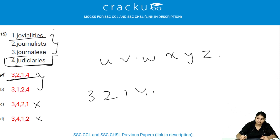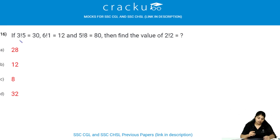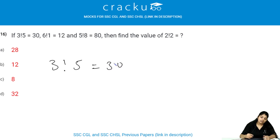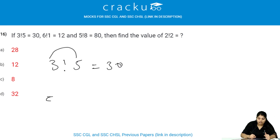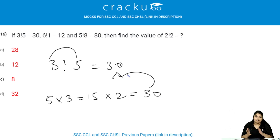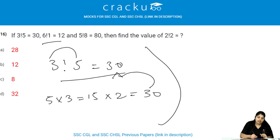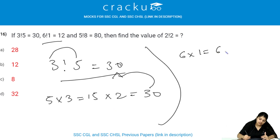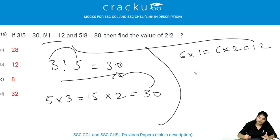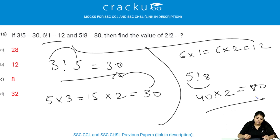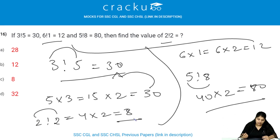This is not a factorial — it is just a symbol. 3 ! 5 = 30. Let us try: 5 × 3 = 15, then 15 × 2 = 30. Checking with 6 and 1: 6 × 1 = 6, then 6 × 2 = 12 — correct. And 5 ! 8: 5 × 8 = 40, 40 × 2 = 80 — correct. So the pattern is: multiply the two numbers, then multiply the result by 2. For 2 ! 2: 2 × 2 = 4, then 4 × 2 = 8. Therefore, the answer is option C.